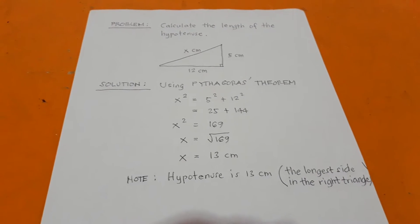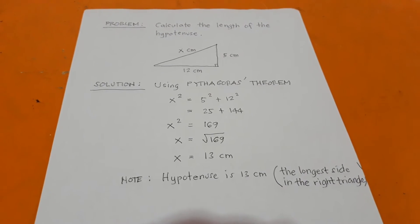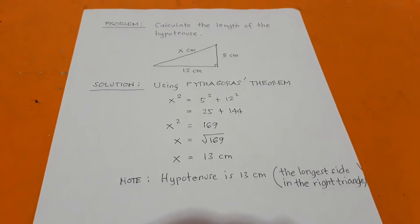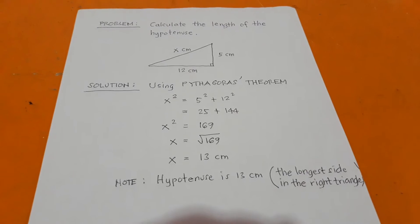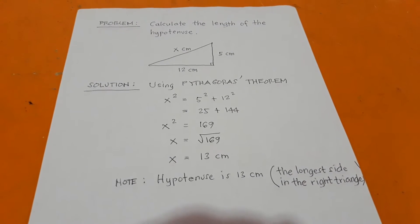This is a problem about Pythagoras' Theorem, finding the length of the hypotenuse or the longest side in a right triangle.